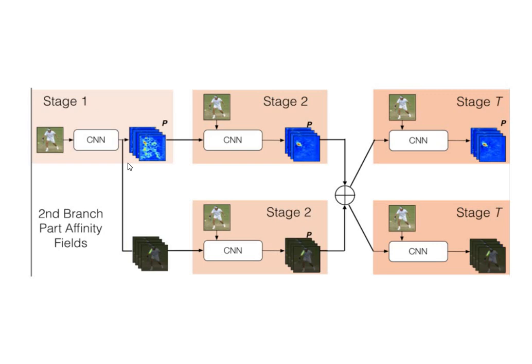This network is not a single-stage network — it has multiple stages. Each stage refines the output from the previous stage. In the first stage we get many different results, which are refined in further stages. We take the confidence map from the previous stage and pass it to the next stage, and do the same for the PAFs, progressively refining our results.